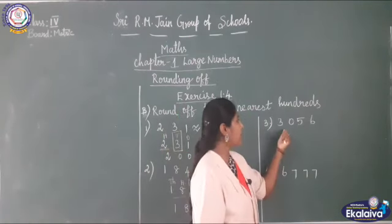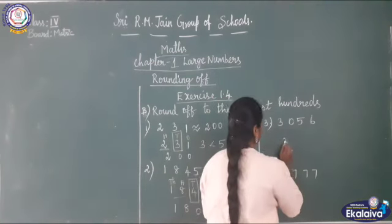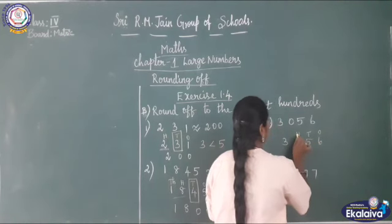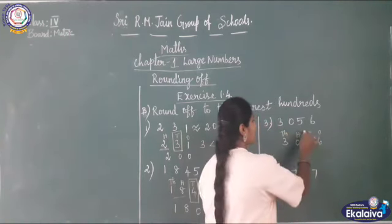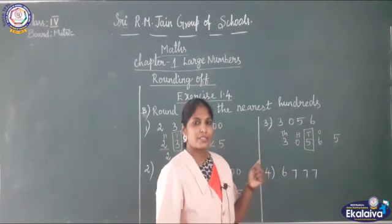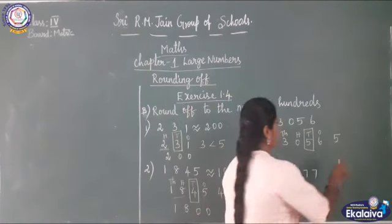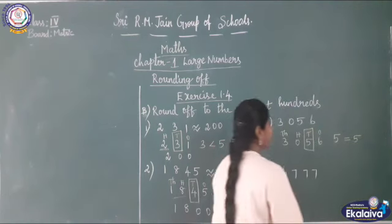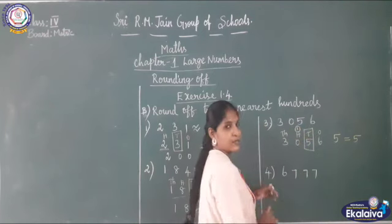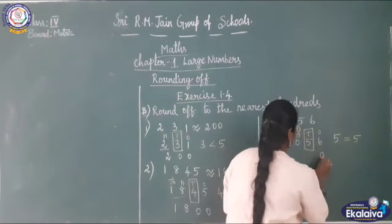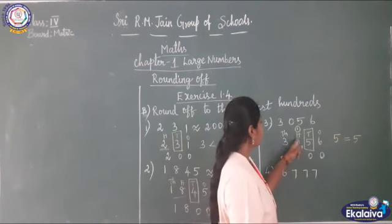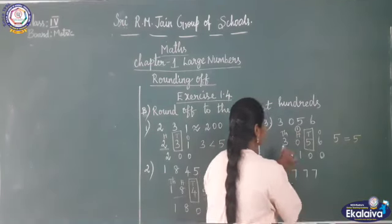Next sum: 3056. Write the place values — ones, tens, hundreds, thousands. Check the tens place. 5 is equal to 5. When it is equal to 5, you add 1 to the hundreds place and put 0 in tens and ones place. 0 plus 1 is 1 in hundreds place. So the answer is 3100.